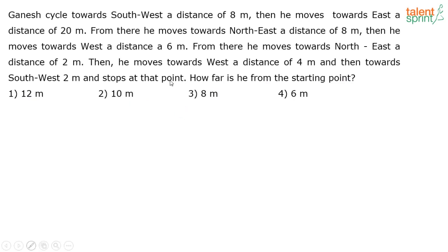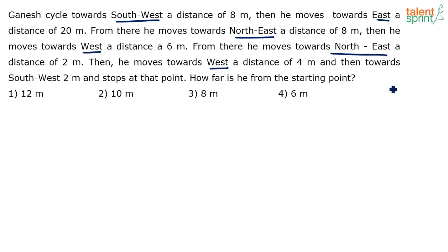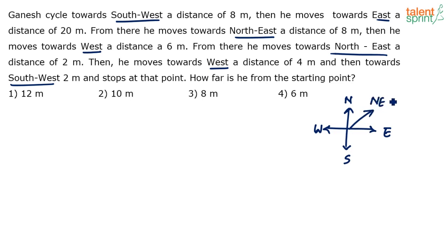Once you read this question you should be happy that all the directions are clearly specified — it's not about right or left turns where you have to spend time figuring out orientation. The actual directions are clearly mentioned: southwest, east, northeast, west, and so on. Let's quickly recap: east, west, north, south are cardinal directions. Northeast is between north and east, southeast between south and east, southwest between south and west, and northwest between north and west.